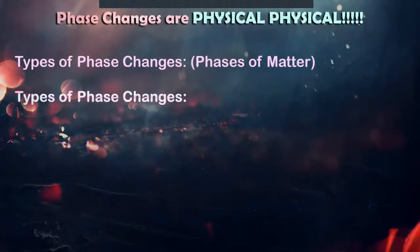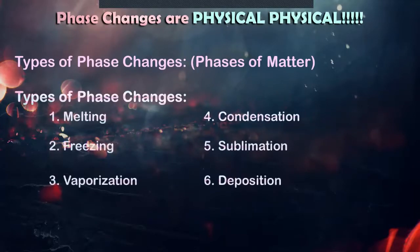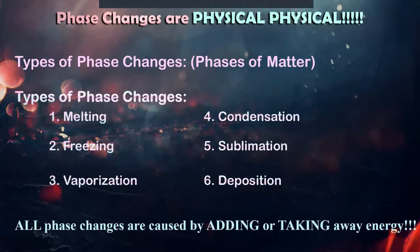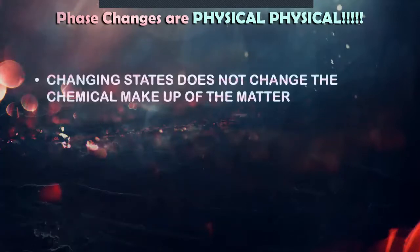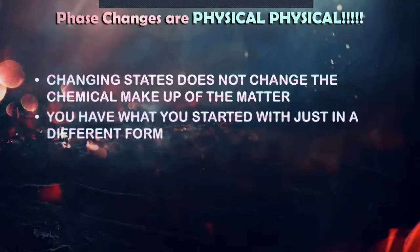Types of phase changes: melting, freezing, vaporization, condensation, sublimation, deposition. All phase changes are caused by adding or taking away energy. Again, changing states does not change the chemical makeup of the matter. You have what you started with just in a different form.